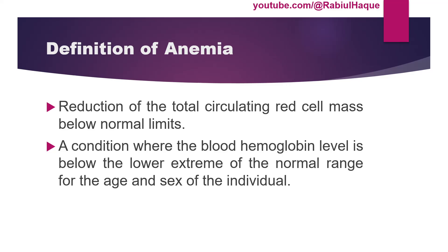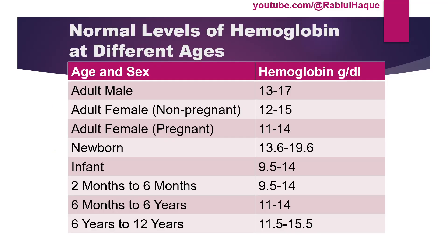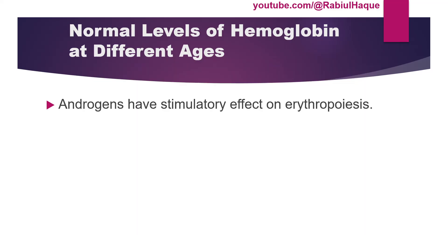Now let's move on and talk about the normal levels of blood hemoglobin at different ages. Always remember, normal blood hemoglobin level depends upon the age and sex of the individual and also on the environment. There is a difference between the level of hemoglobin in male and female in certain age groups, and that is due to androgen. Androgens have stimulatory effects on erythropoiesis, and androgen level is higher in males compared to females, which is why there will be more erythropoiesis and more hemoglobin in males in certain age groups.